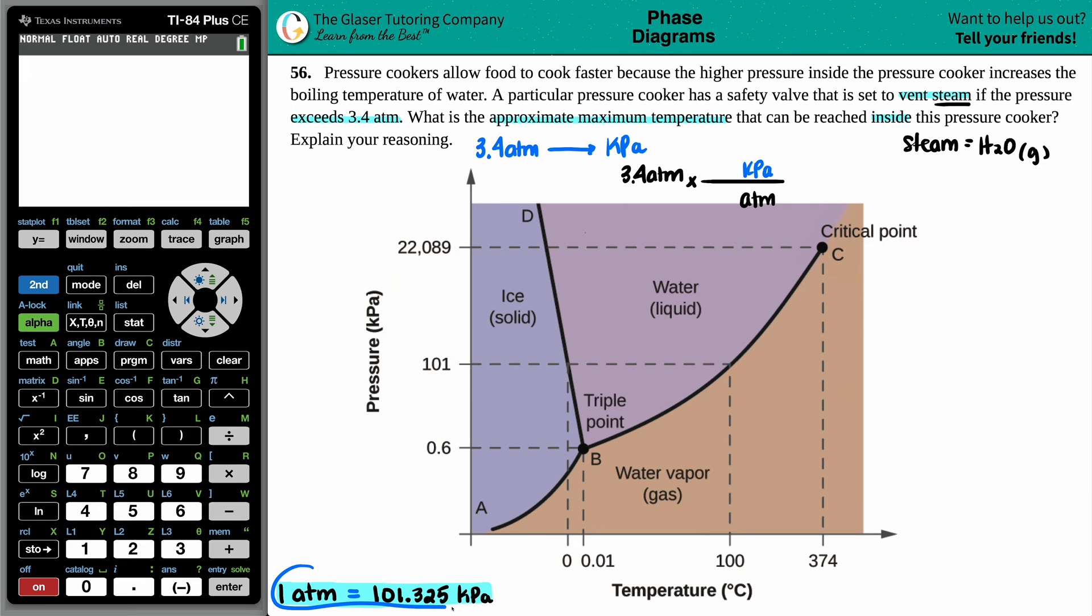And remember for atm and kilopascal, I just wrote the conversion down here: 1 atmosphere or 1 atm equals 101.325 kilopascals. So the 101.325 goes up top and the 1 atm goes in the bottom. ATM cancel out, and now you're just left with the units of kilopascals. So in this case, all we have to do is just take 3.4 and times it by the 101.325.